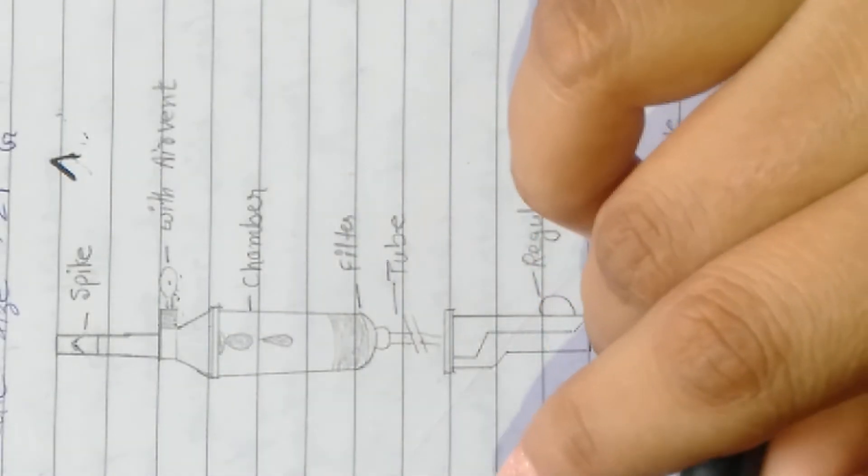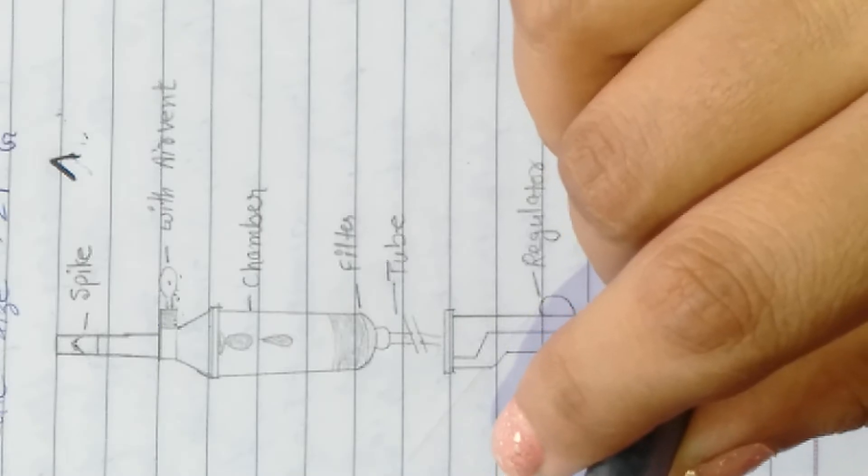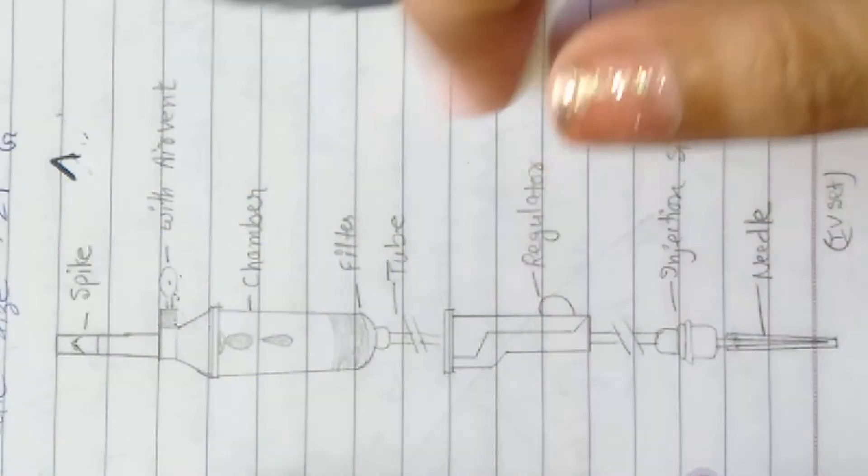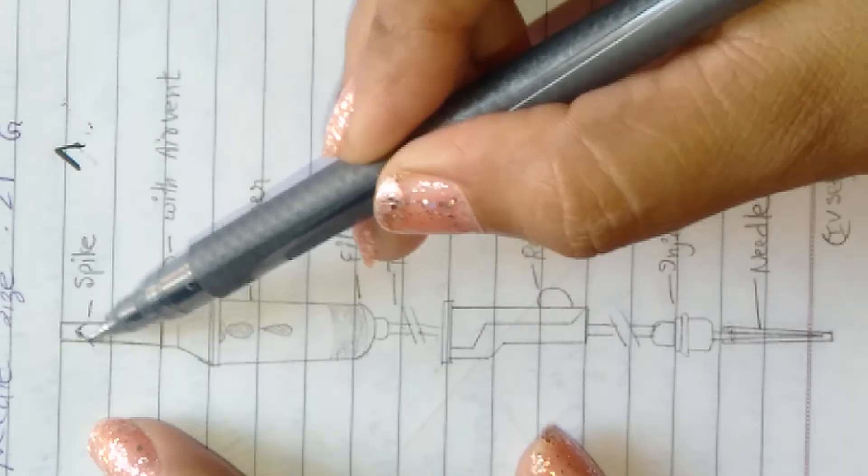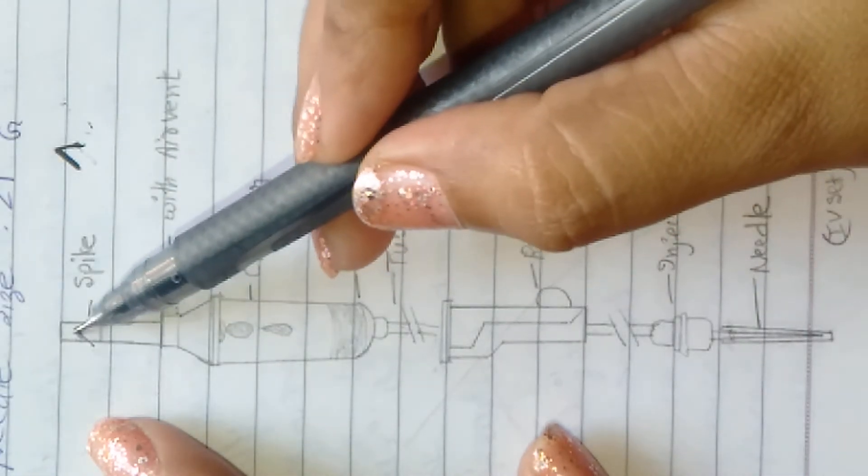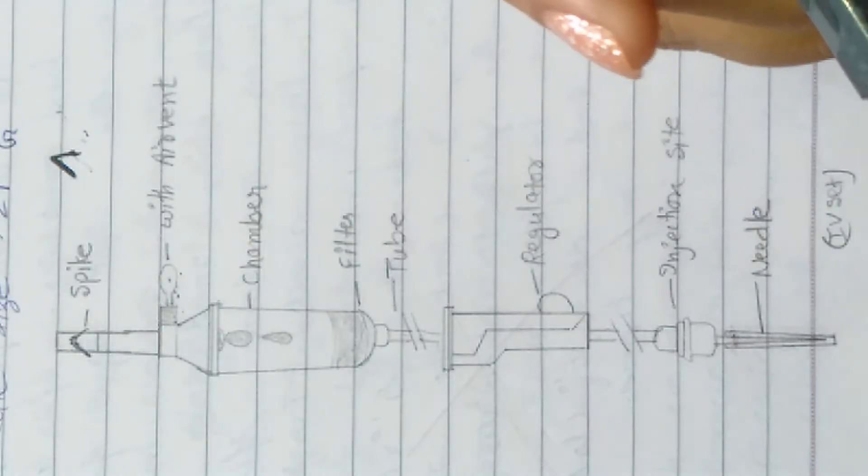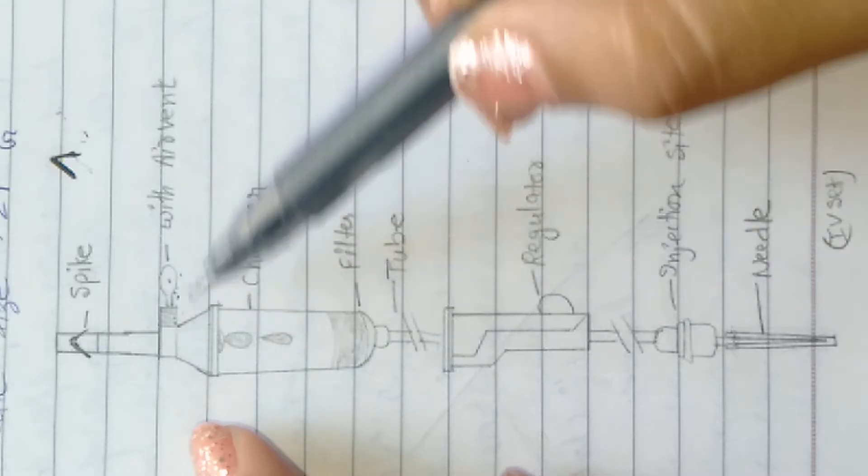Hello everyone, welcome to my channel Kamal Nursing Guide. In today's video, we will discuss the intravenous fluid or IV set. Please have a look at this diagram of the intravenous set. This is the spike, the sharp edge at this side which is inserted into the glucose or any fluid bottle. And this is the air vent.